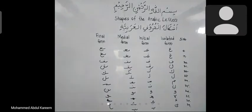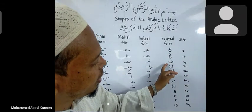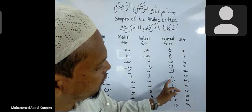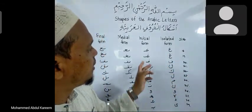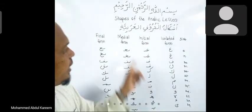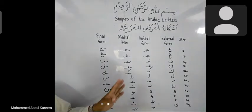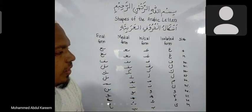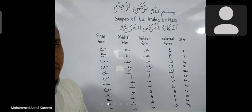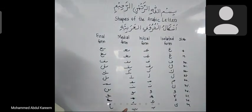Here you can see the remaining letters, numbers 18 to 29. These are the initial forms of the letters, these are the medial forms, and these are the final forms. We are winding up our class here — take a screenshot and later copy it into your notebook. Thank you.